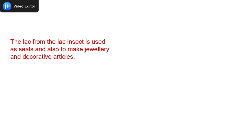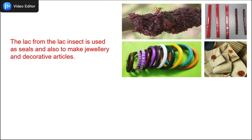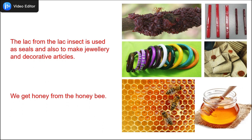Next, we learn about something new — what we call lac. The lac from the lac insect is used as seals and also to make jewellery and decorative articles. The brown thing on top — you can see the little insect called the lac insect — it produces a red substance which is made into sticks and is used to make government seals. Some bangles are also made from lac. We also get honey from the honeybee, and honey has medicinal qualities.